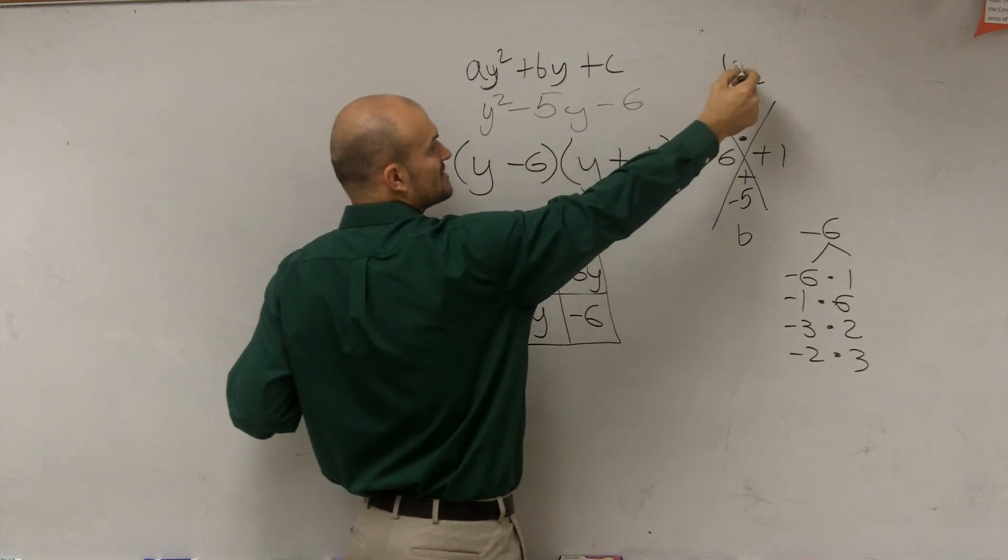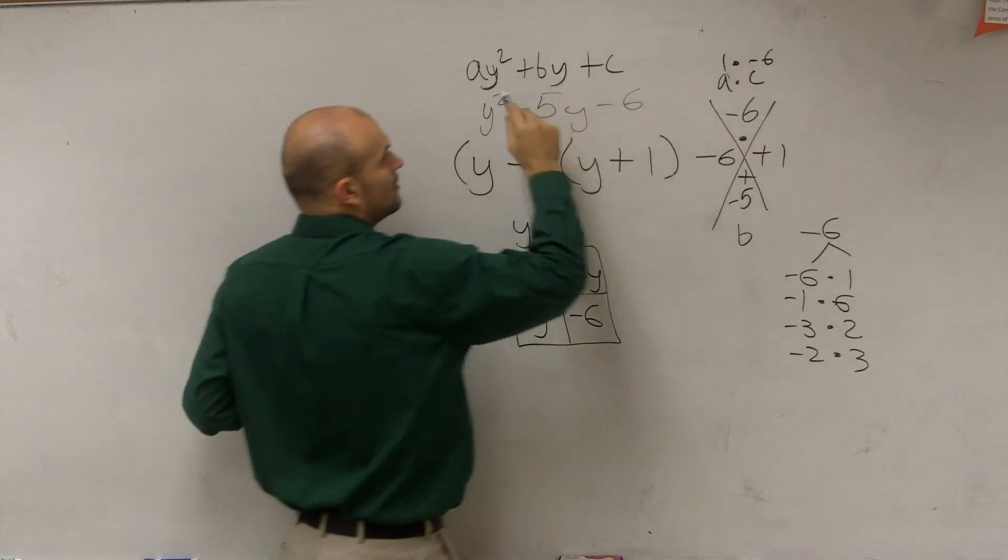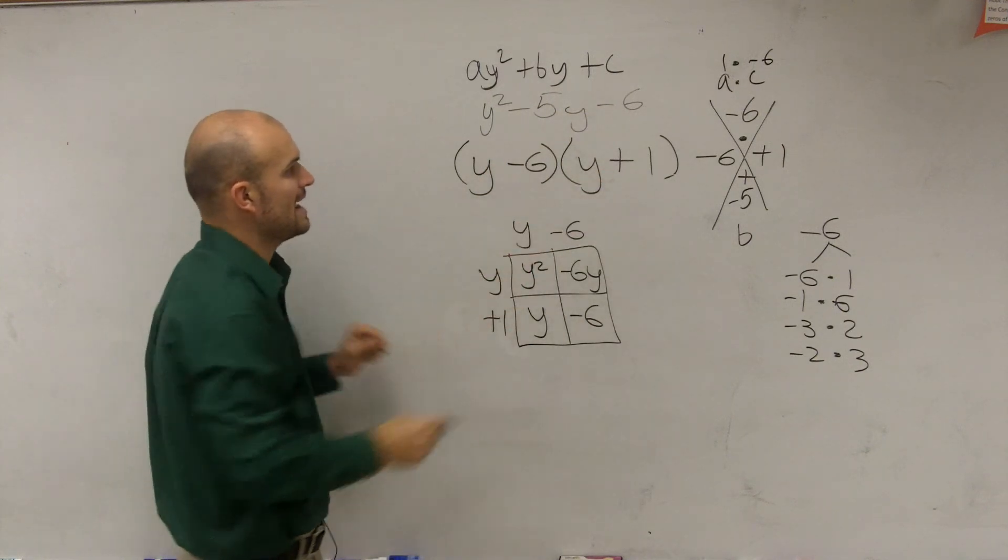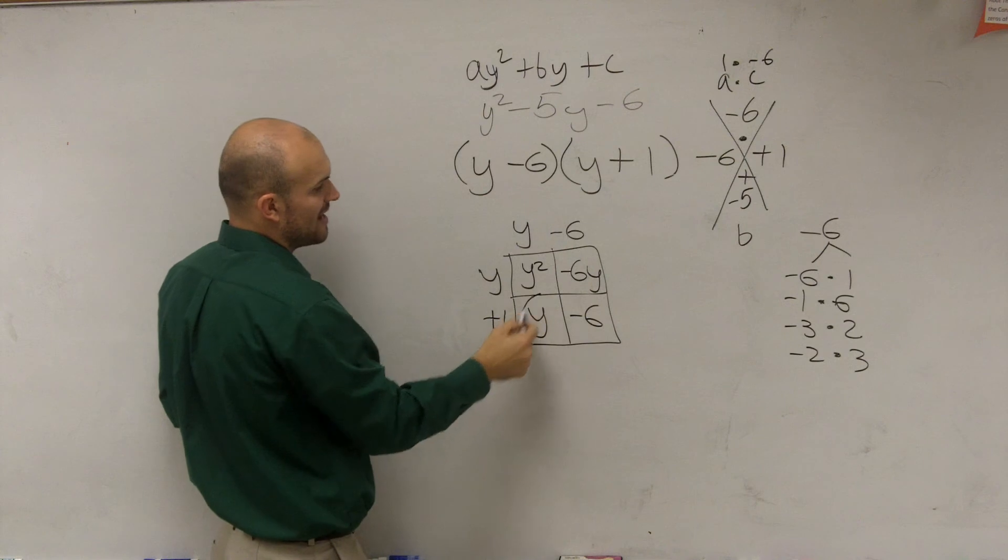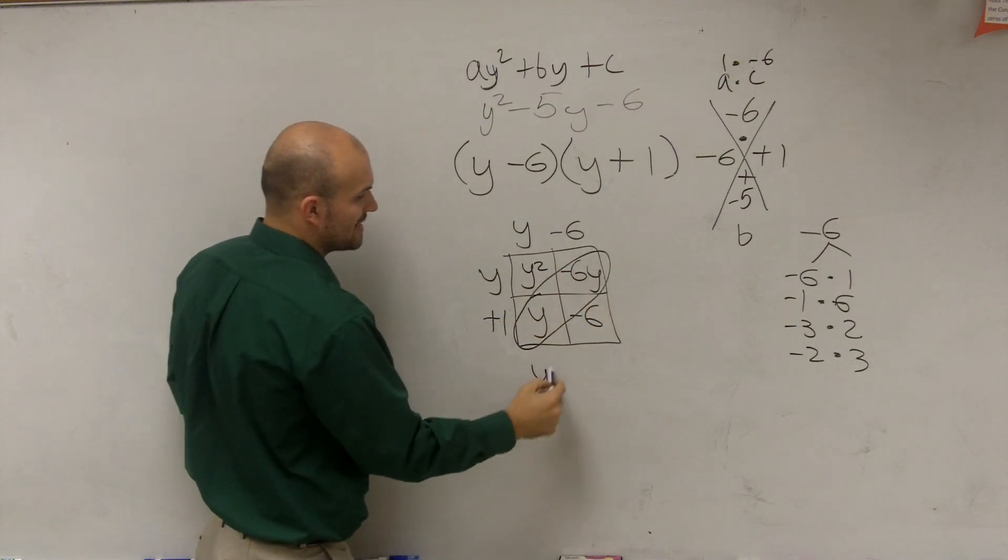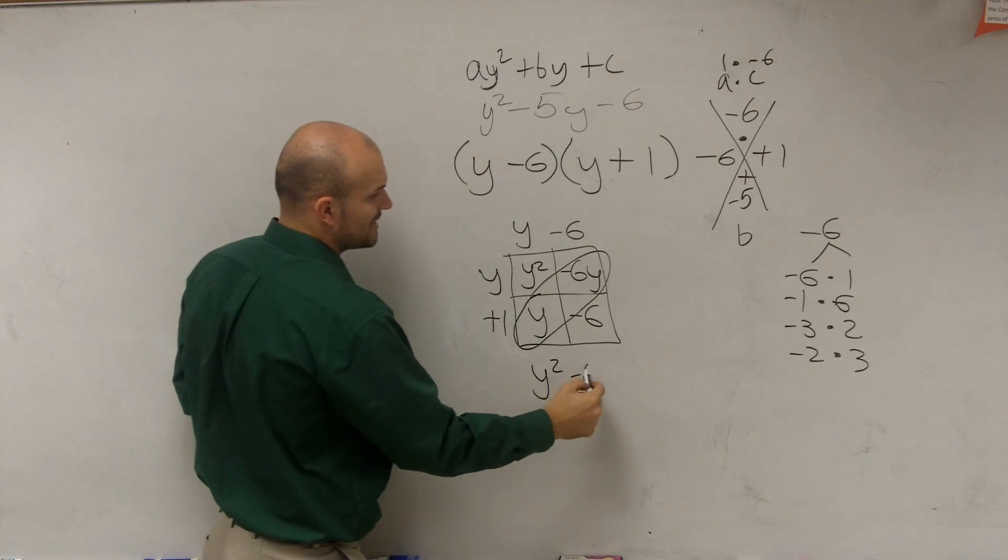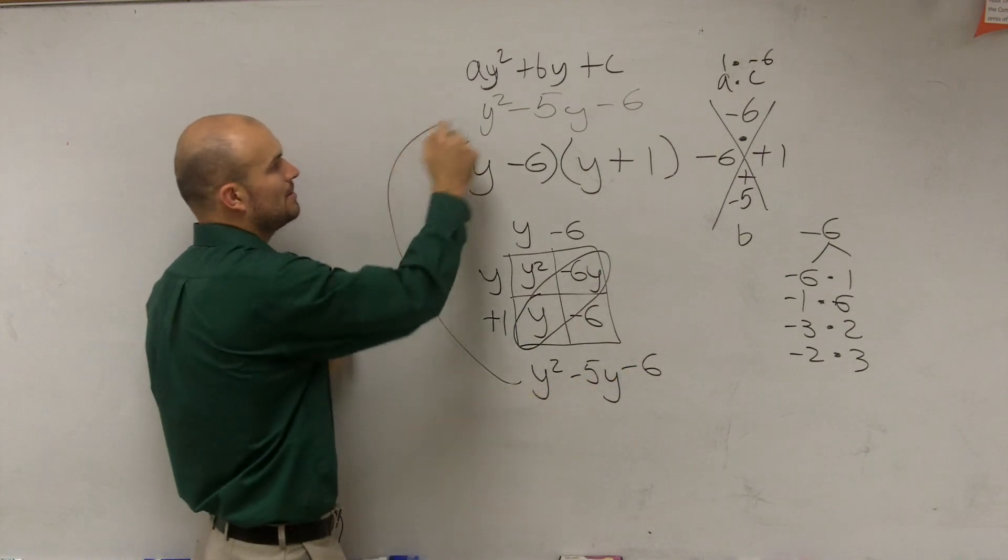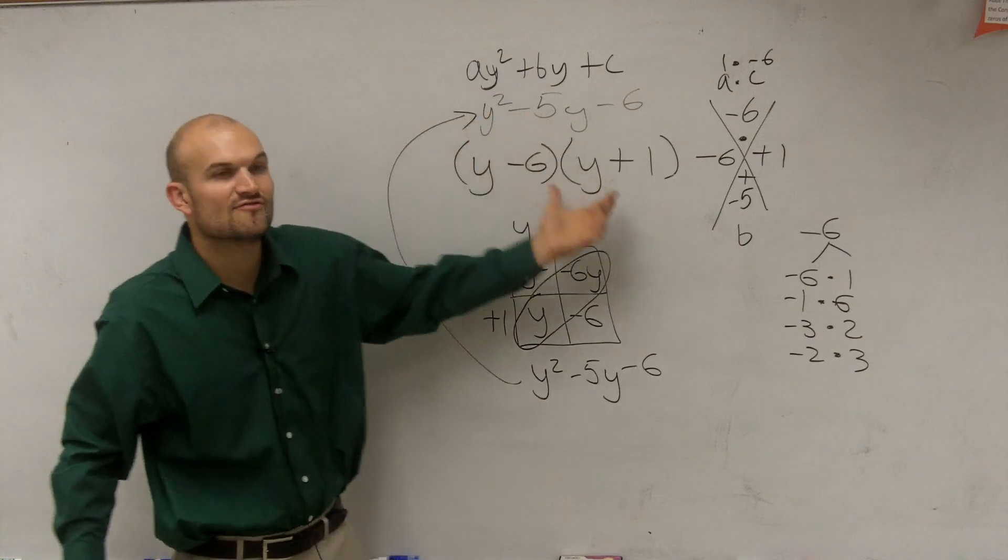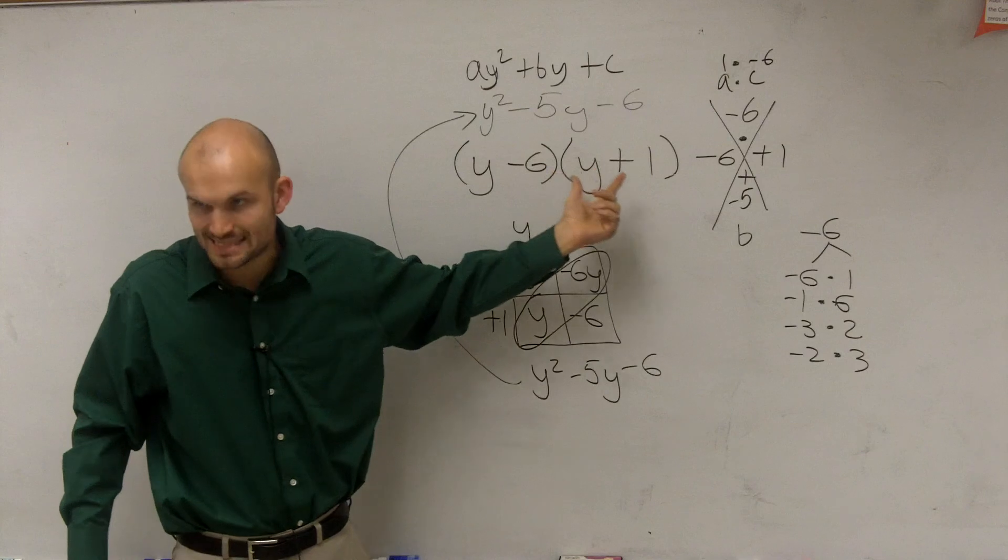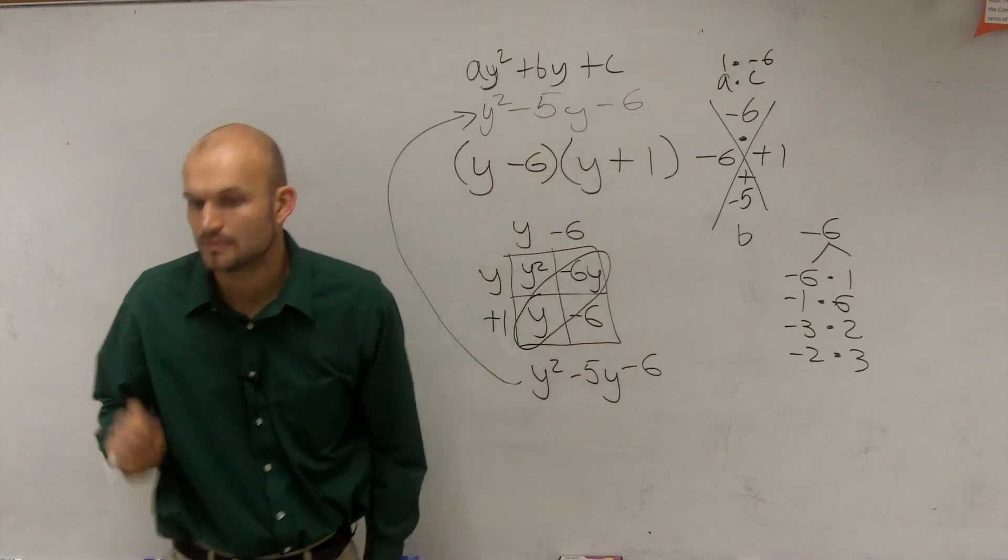So we multiplied 1 times negative 6. Notice, what did we multiply to get this number? We multiplied our inner terms to give us that. Then what are we adding? We're trying to add to get negative 5. What are we adding up there? So our final answer is y squared minus 5y minus 6. Is that our original problem? Yes. So is this factored correctly? Yes. Our problem is now written as a product of its factors.